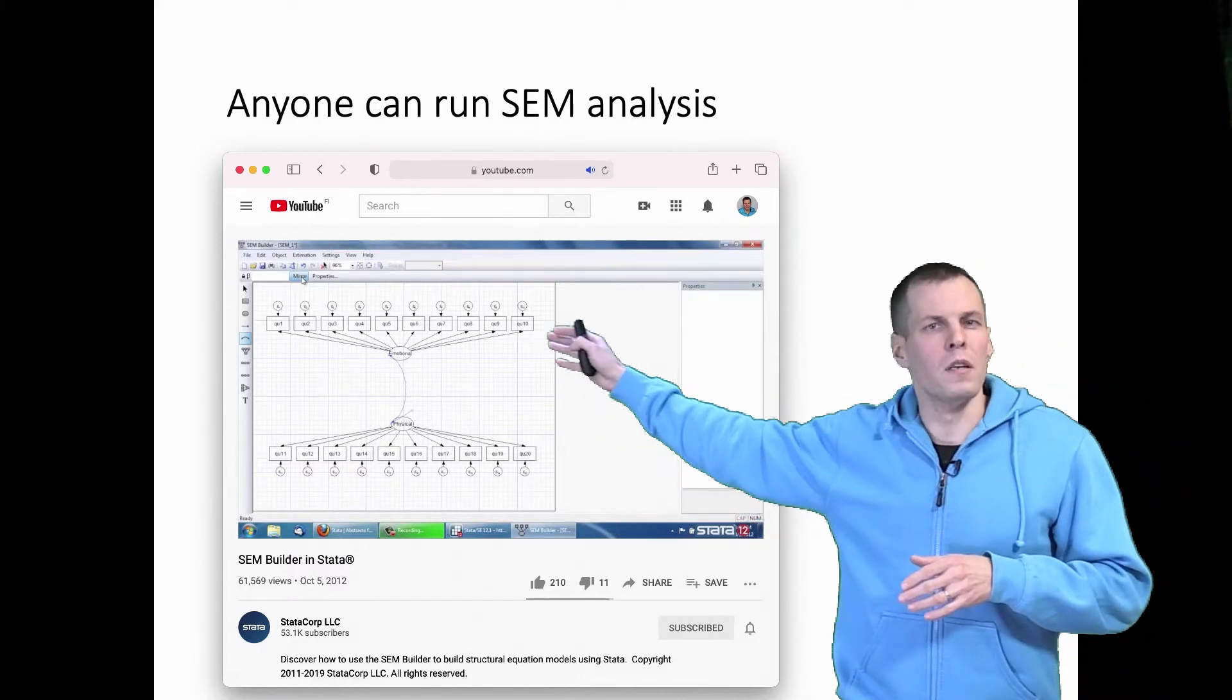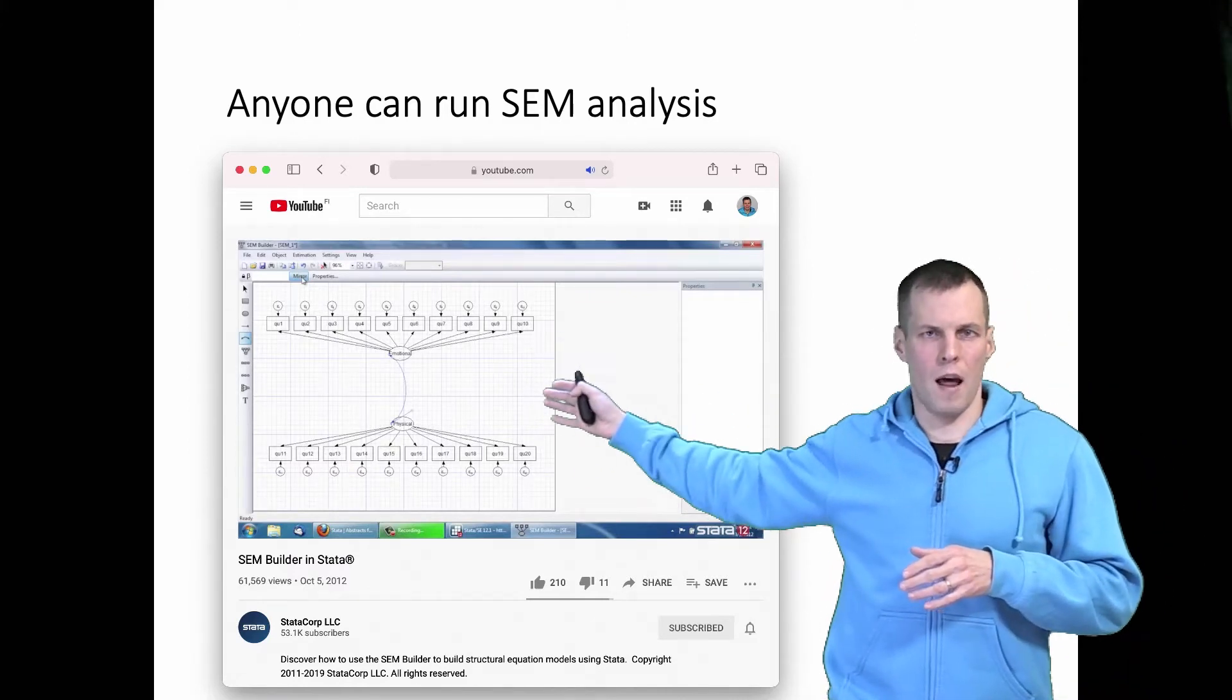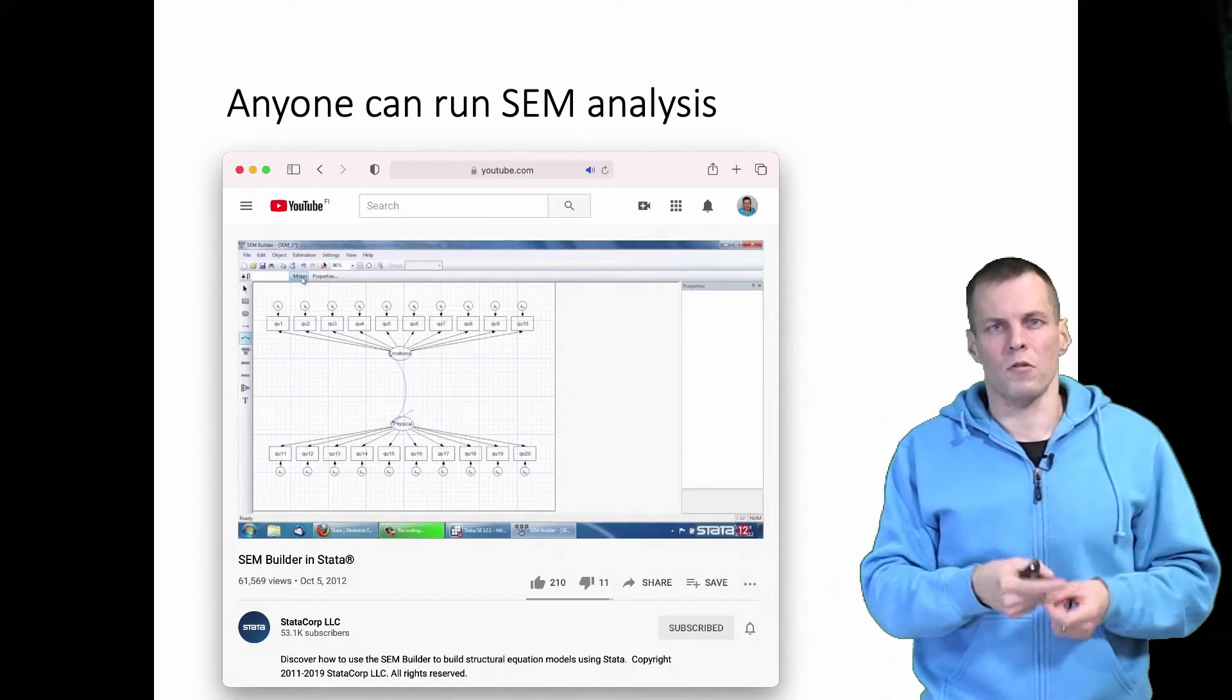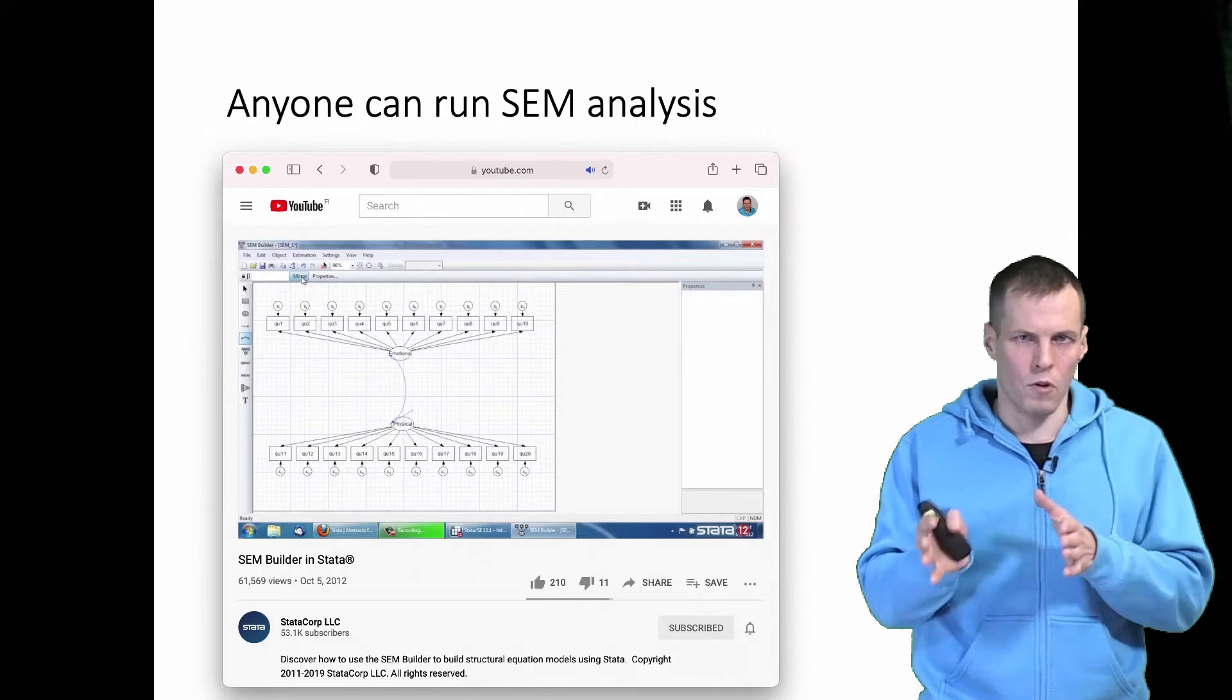How do you actually specify the model? So what is the theory behind these boxes and arrows and how do you justify the boxes and arrows and how do you interpret the results is much more difficult.